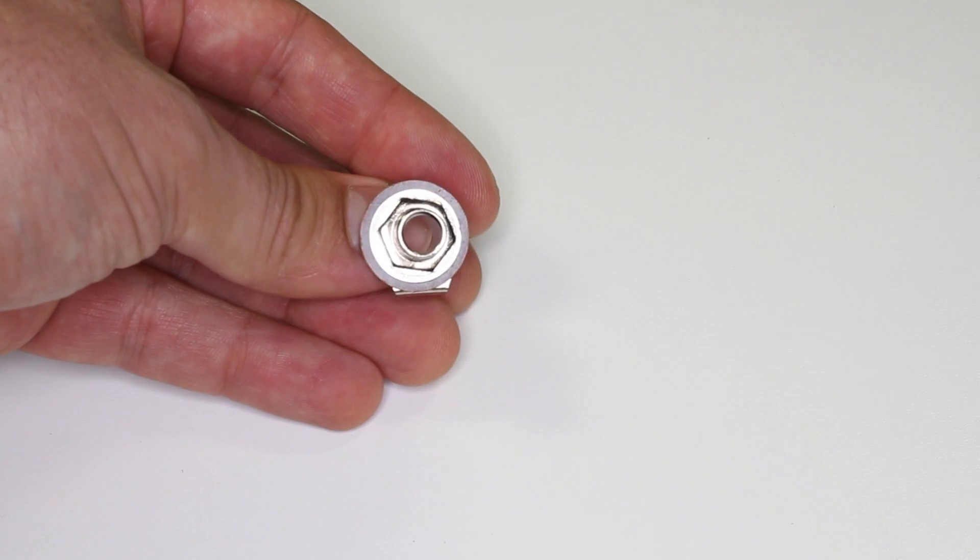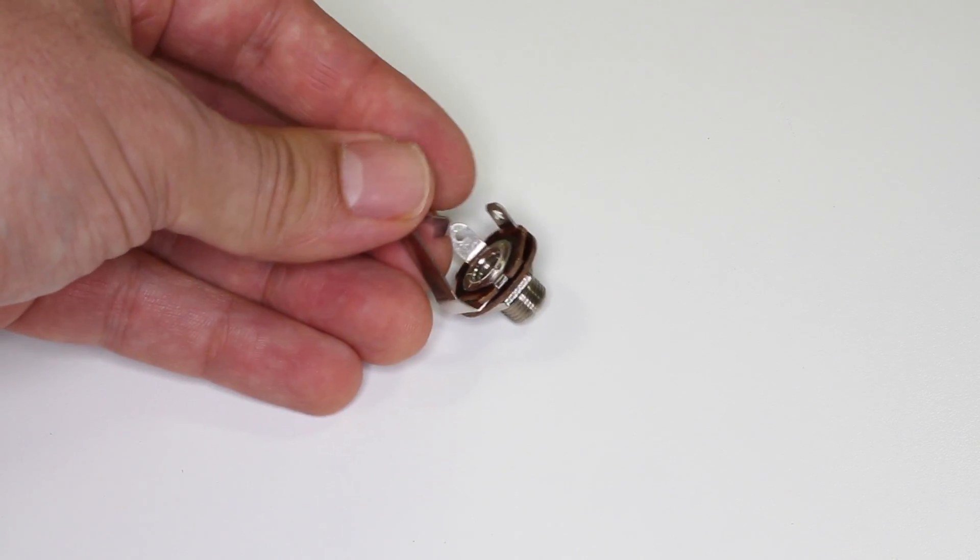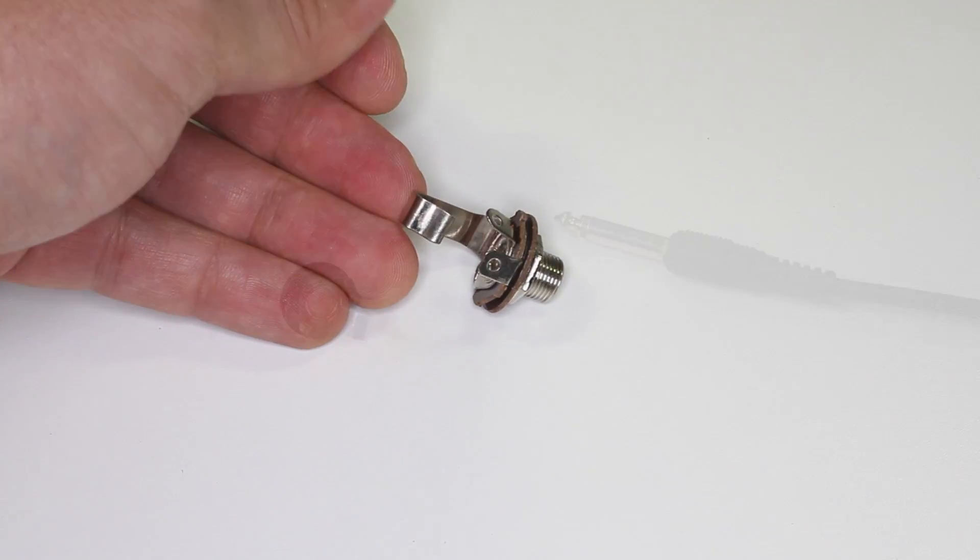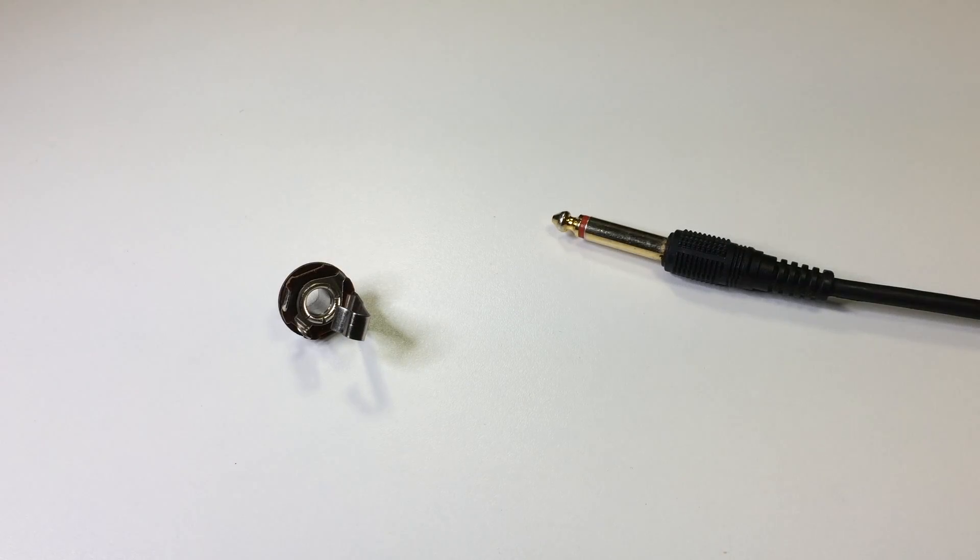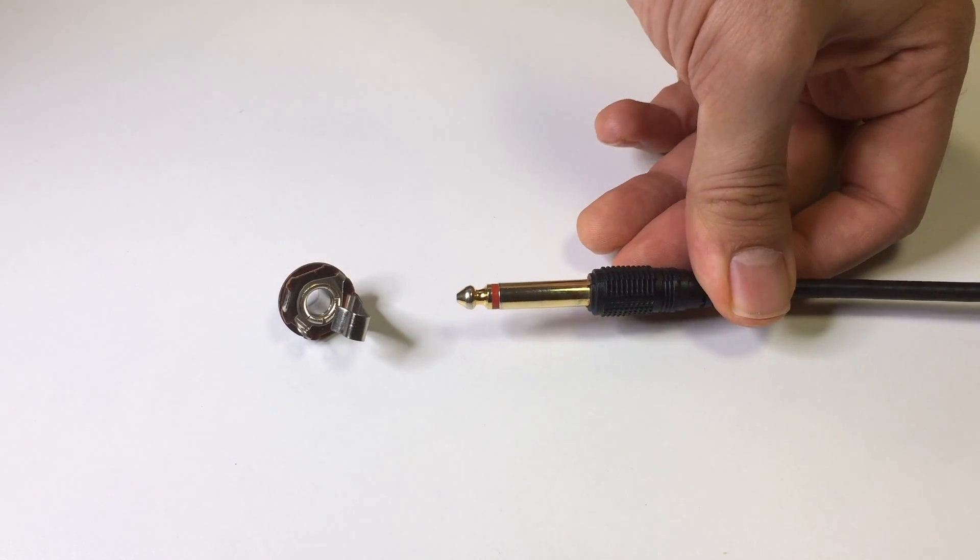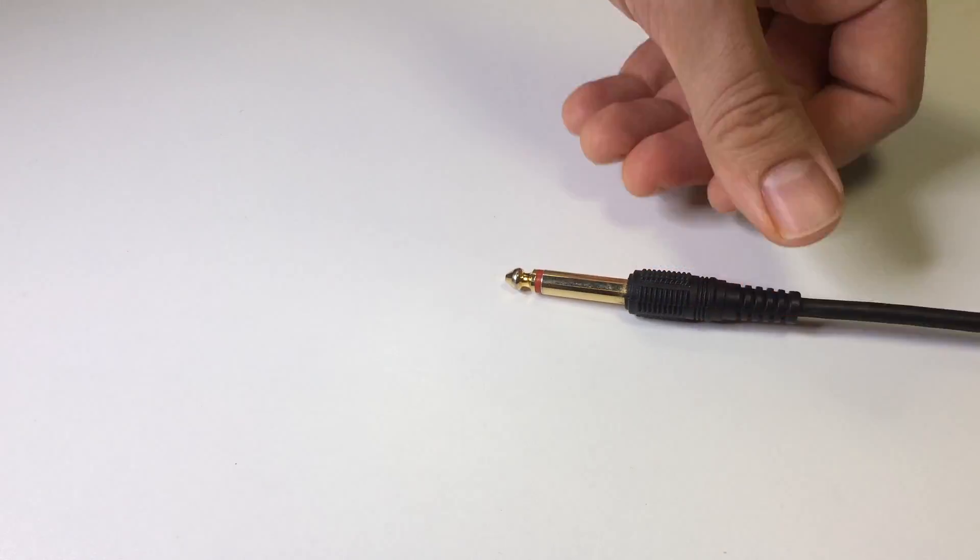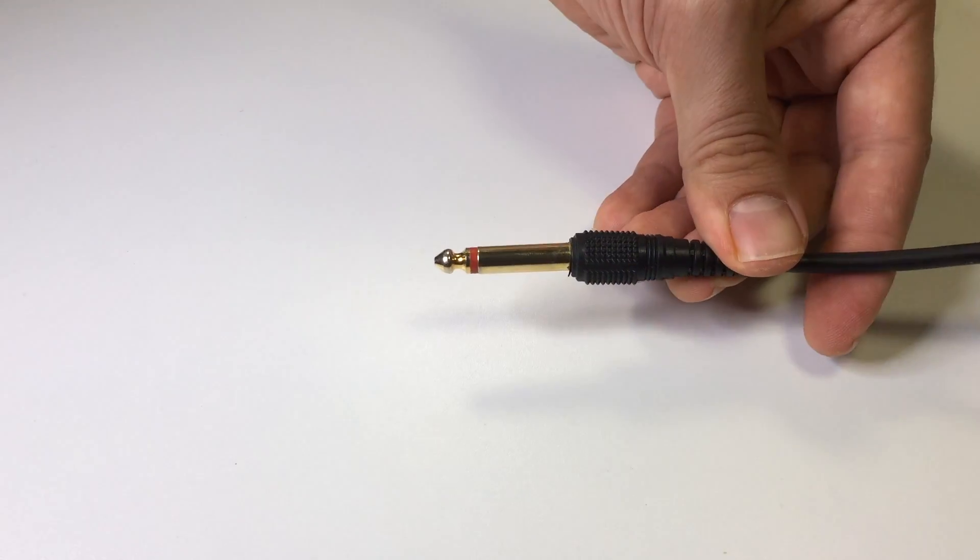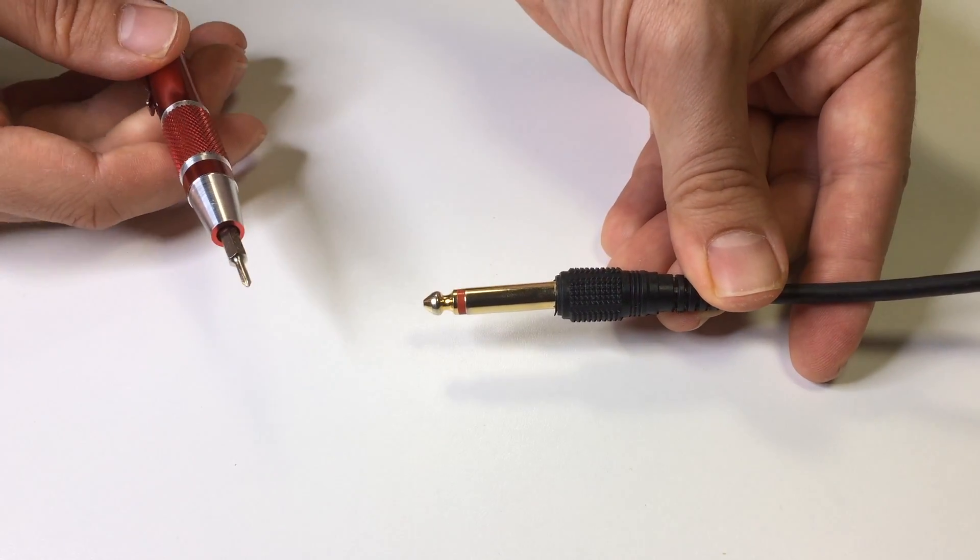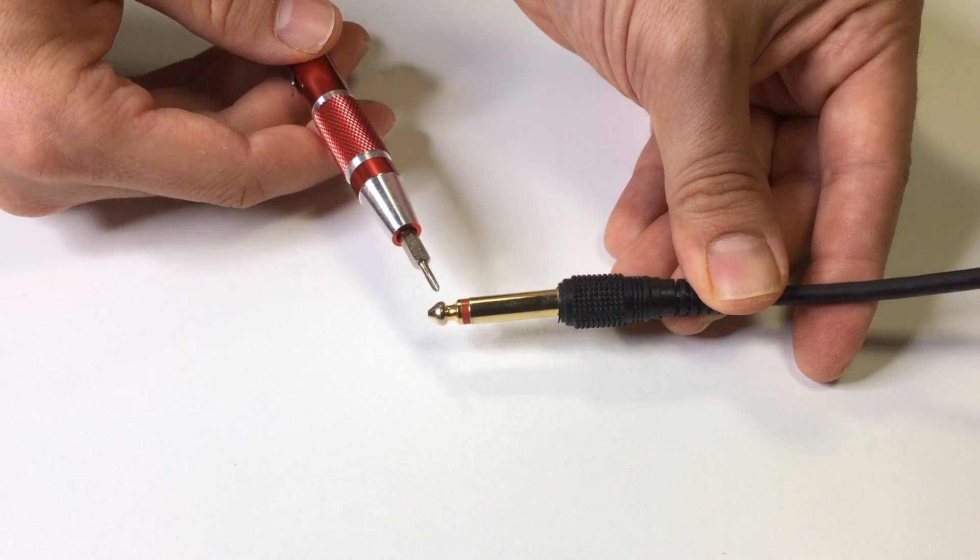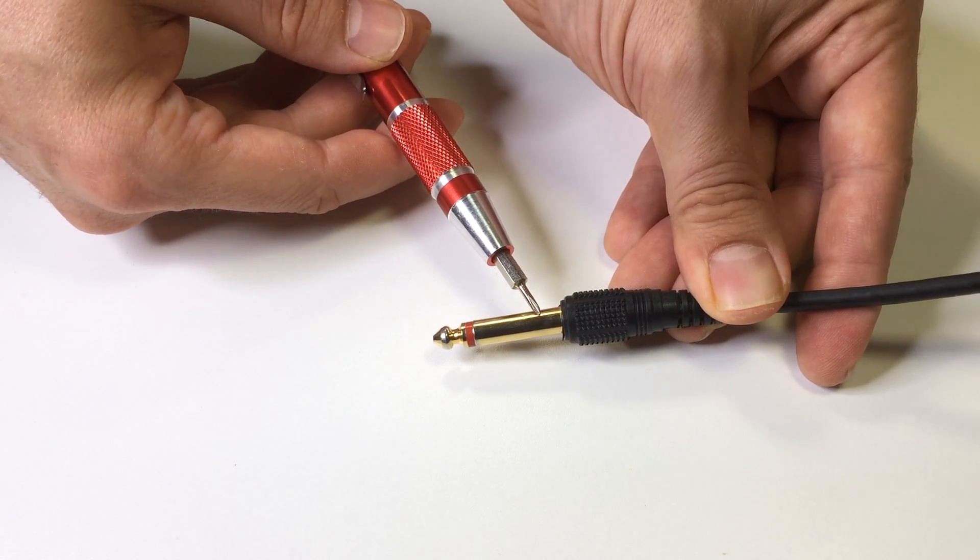Okay, so let's continue building. In this step, we'll install the quarter-inch jack onto the circuit board. First, we need to identify the positive and negative terminals on the jack. If you take a look at the plug of a patch cable, you'll notice it has two parts, the tip and the sleeve.